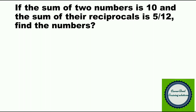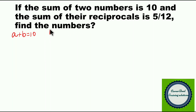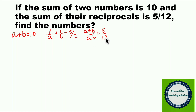Hope you got the answer. Let's try to solve the problem. If the sum of two numbers is 10, take the two numbers A and B, so A plus B equals 10. The sum of the reciprocals is 5 by 12, meaning 1 by A plus 1 by B equals 5 by 12. Solving this gives A plus B divided by A times B equals 5 by 12. Substituting A plus B as 10, you get A times B equals 24.